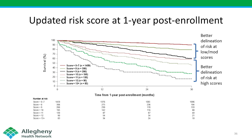With the updated risk score, there is much better delineation of risk at low or moderate scores, as well as at high scores. We now have a system with high fidelity and high calibration to accurately determine risk in patients being treated for pulmonary arterial hypertension.